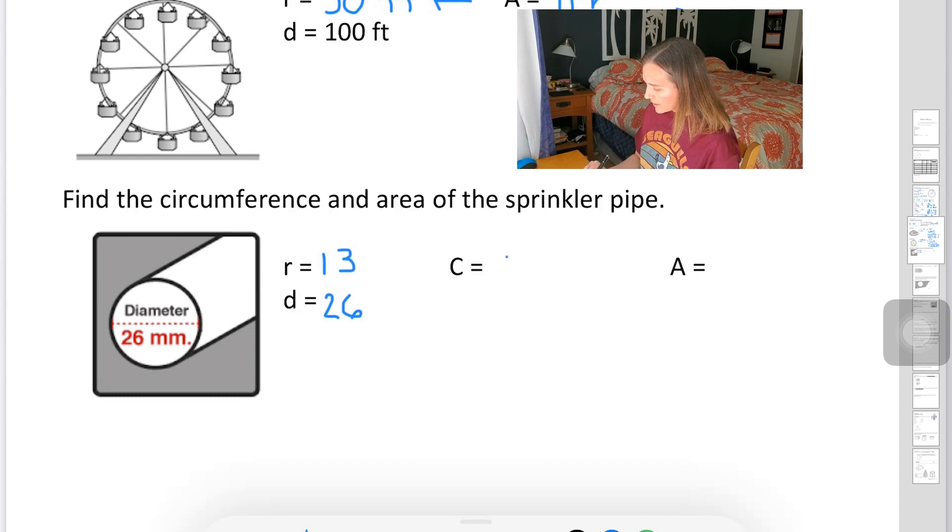And so now my circumference is going to be pi times diameter. And in this case, our diameter is 26. There it is right there. So it's going to be 26 times pi. And again, we are not going to change that to 3.14. So my answer is going to be 26 pi millimeters.